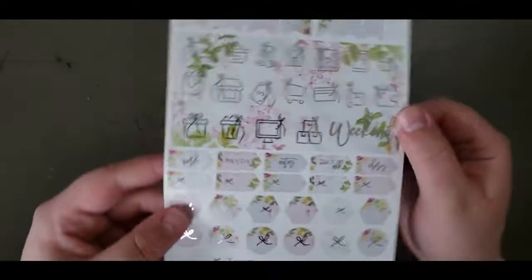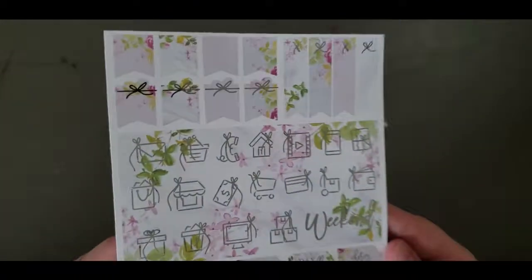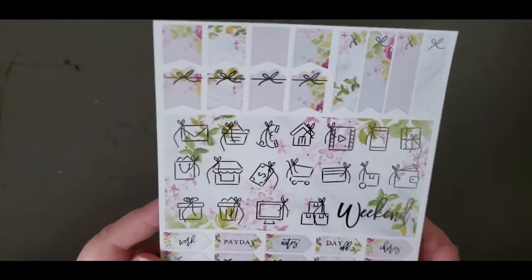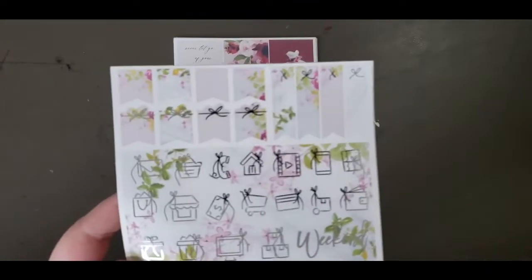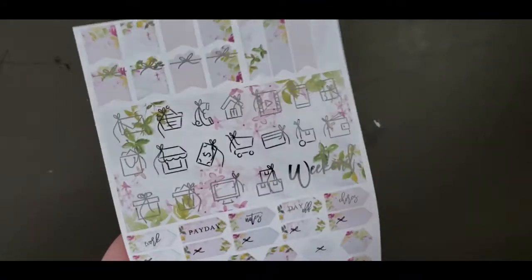And then we have the sampler that I got which is also vinyl in that same kind of cherry blossom-y pattern. So there's some flags, some big foiled icons including a weekend banner, some little labeled flags, and then some hexagons and circles.